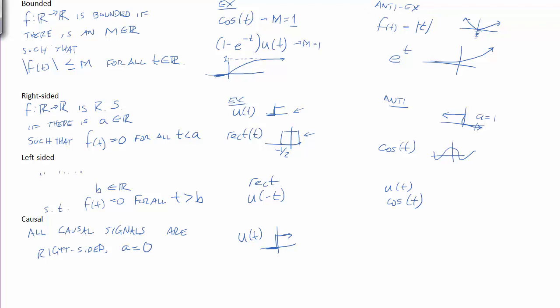Another example is e to the minus t times u of t. This is 0 for all negative time because we're multiplying an exponential times 0. And it is a decaying exponential in positive time. So you can see that we can actually make any signal causal if we multiply it by a unit step. And that's kind of an important feature.